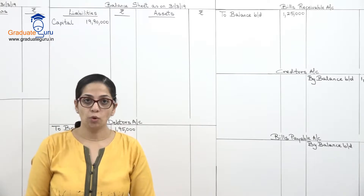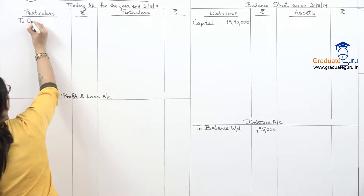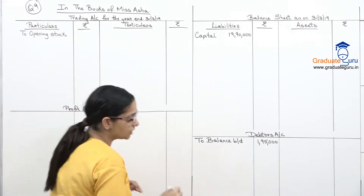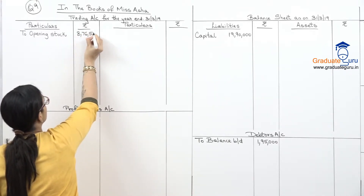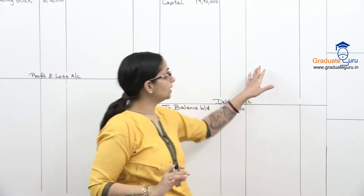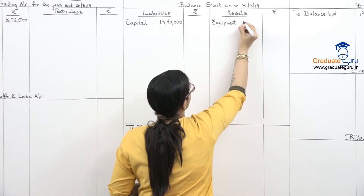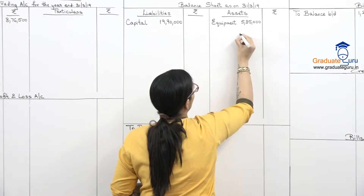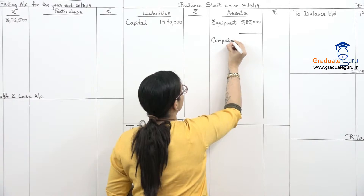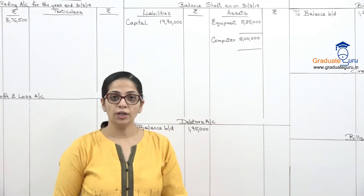The stock in the opening balance sheet is our opening stock, which goes to the trading account — to opening stock, amount eight lakh seventy six thousand five hundred. Equipment and computer only have a depreciation adjustment, so I'll put them directly in my balance sheet: equipment five lakh eighty five thousand (leaving space for depreciation) and computer five lakhs (leaving space for depreciation). Opening balance sheet is now done.